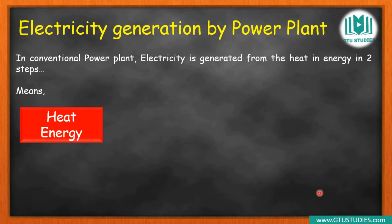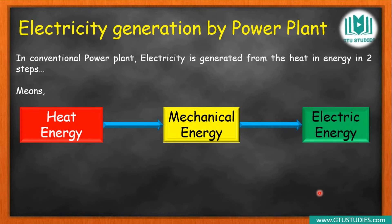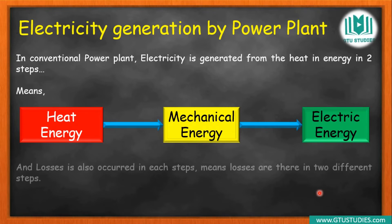In a conventional thermal power plant, the first input source is used to generate heat, which is then supplied to a turbine. The turbine produces mechanical energy, and that mechanical energy is finally converted by a generator into electrical energy. This is a two-step conversion: heat energy to electrical energy. The key point is that direct single-step energy conversion improves overall efficiency.